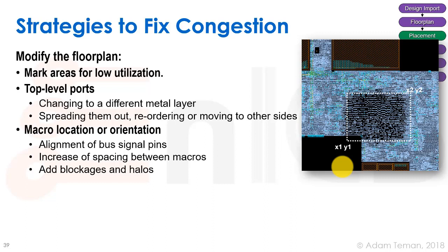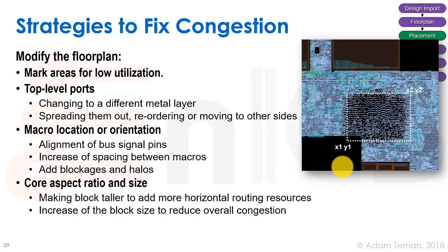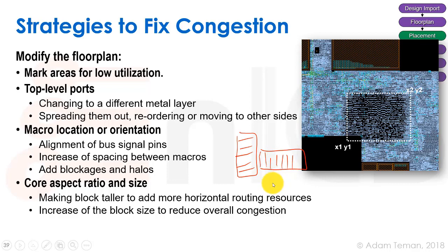Macro location and orientation are significant because both ports and macros are anchors fixed before running the placement algorithm — they load the springs that pull placement areas toward them. Changing macro location or orientation can really affect congestion, including aligning bus signal pins, increasing spacing between macros, adding blockages and halos, and ensuring that macros communicating with the same block are in the same area. Core aspect ratio also matters: if there's a lot of horizontal routing, making the core taller gives more horizontal tracks; for vertical problems, making it wider helps.